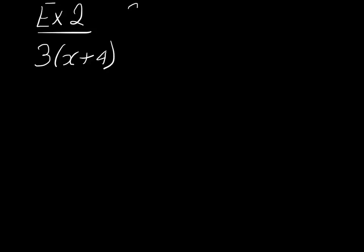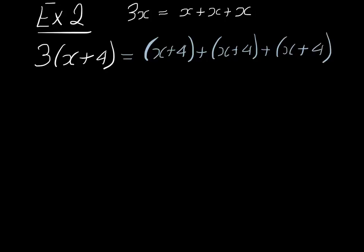Now remember, when we had 3x, that meant x plus x plus x. So when we have 3 times x plus 4, it must mean x plus 4 plus x plus 4 plus x plus 4. And now we can combine. We have an x, add another x, add another x, so we have three x's.